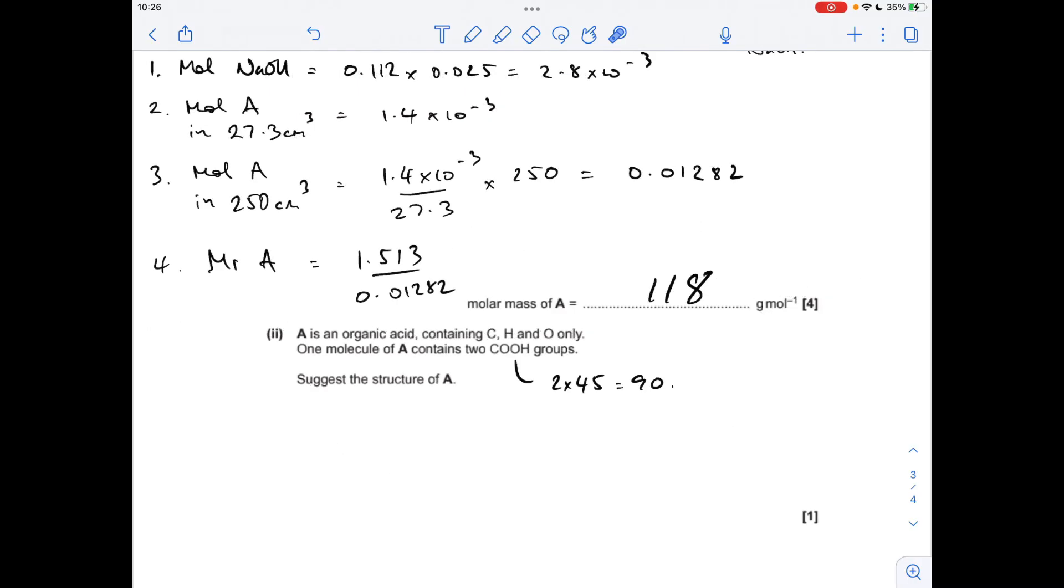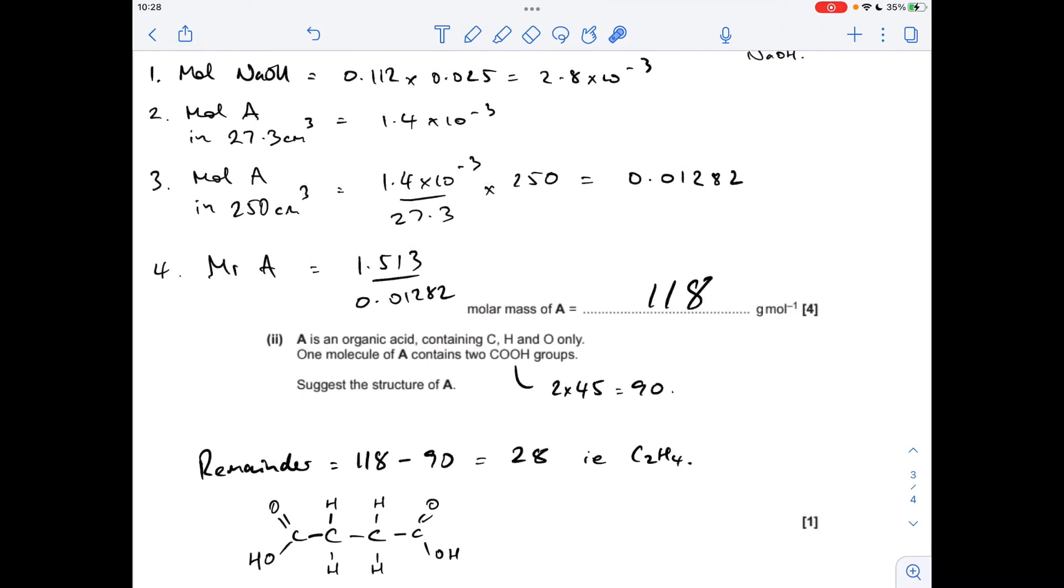So moving on to the structure for acid A. So we're told that it contains two carboxylic acid groups. So the MR of each of those is 45. So if we take 90 away from 118, we're going to find out the mass of the remaining atoms. So that's coming out at 28. So in other words, two carbons and four hydrogens. There's a couple of ways we can put that into the structure. You could go for that structure there. That's probably what I would go for. Or you could go for that structure there.